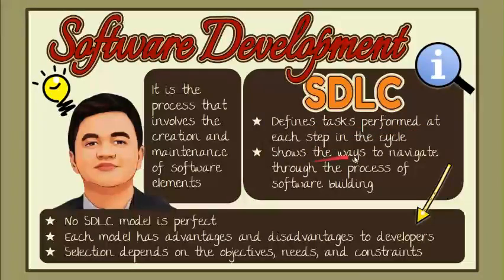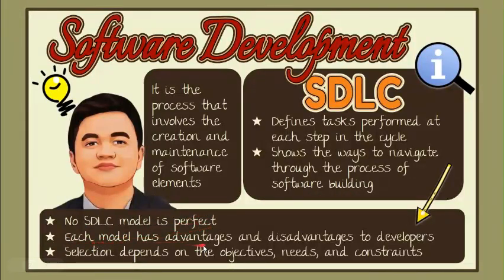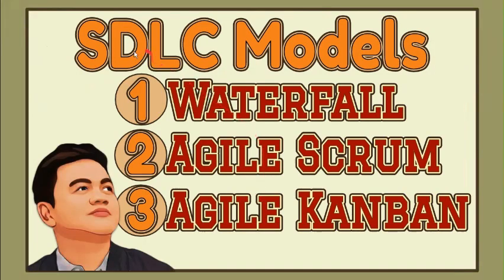It shows the ways to navigate through the complex and demanding process of creating software. Today, there is a wide range of SDLC models available. However, none of them is perfect. Each model brings its advantages and disadvantages for developers. The selection of which model to use depends on the objectives, needs, and constraints of the project. In this video, we are going to learn three different types of SDLC models.